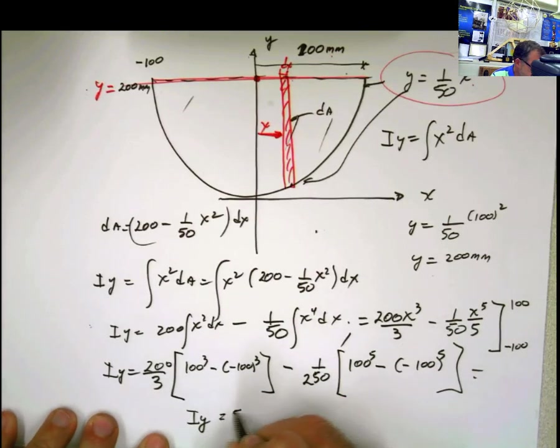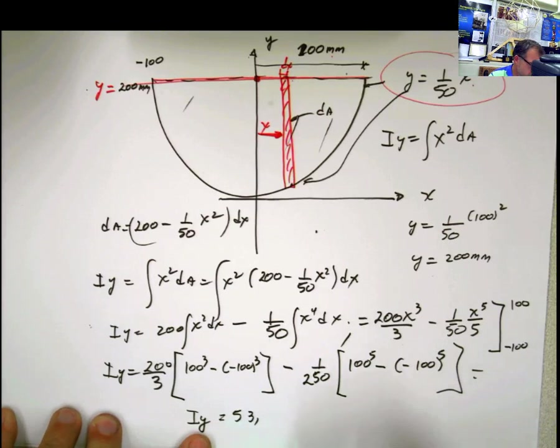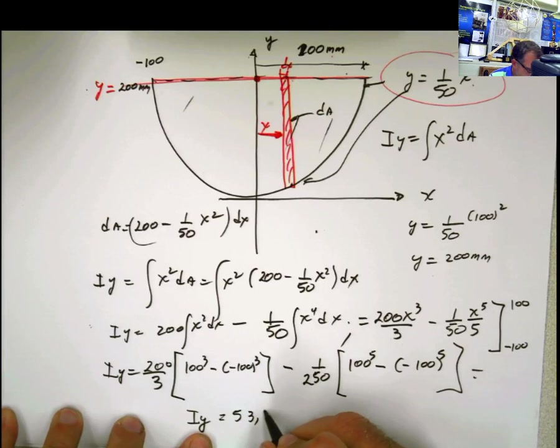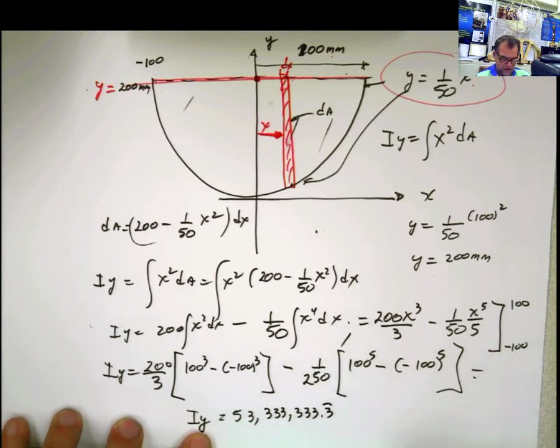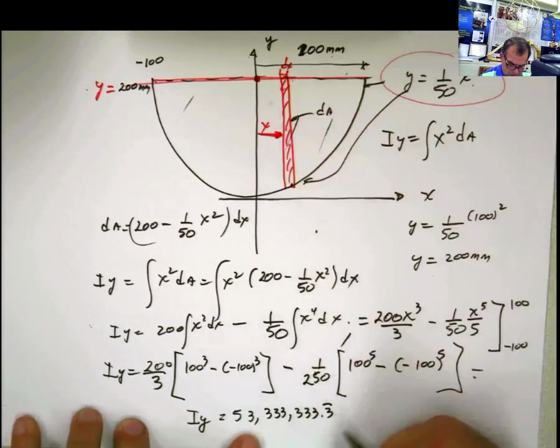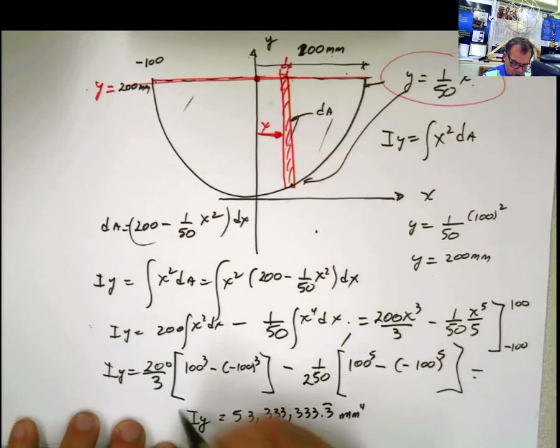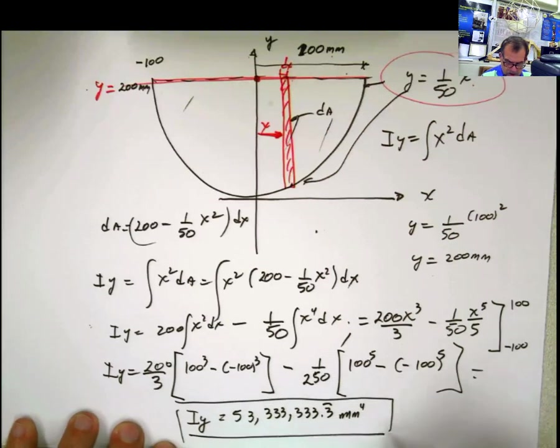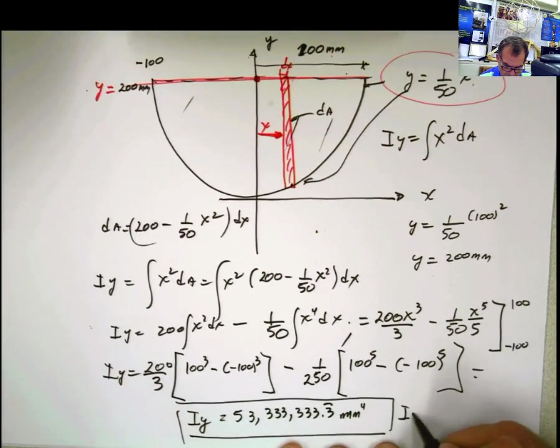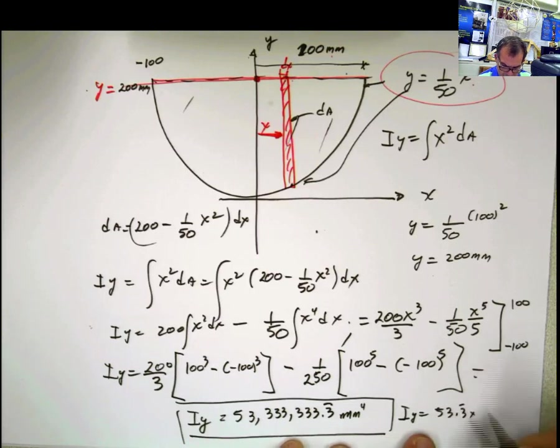And that is equal to 53 million, 333,333.33. So 3 periodic units, millimeters to the fourth. If you want to express this in scientific notation, you can say that I y is equal to 53.3 times 10 to the sixth millimeters to the fourth. There you go.